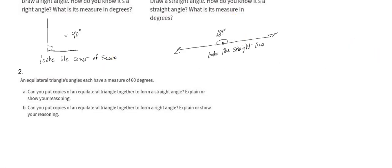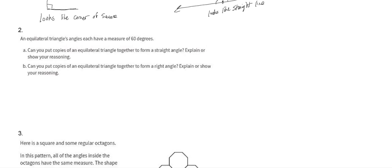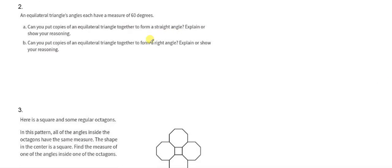Complementary versus supplementary angles. Equilateral triangles' angles each have a measure of 60 degrees. Can you put these together to form a straight angle? Let's see.